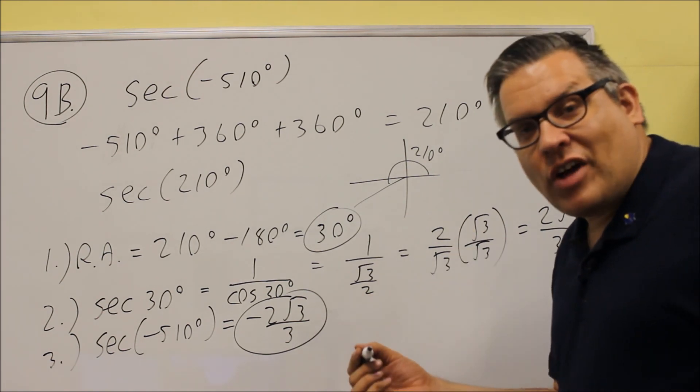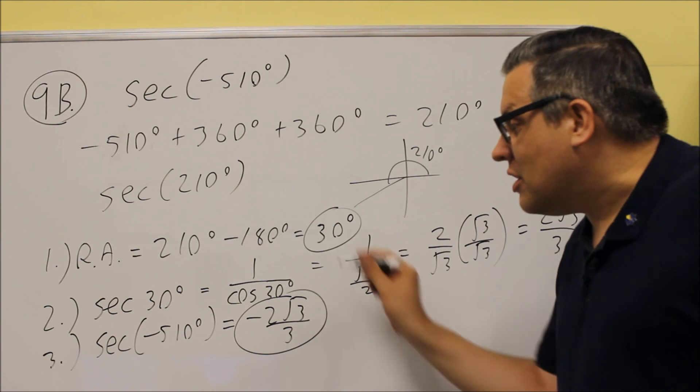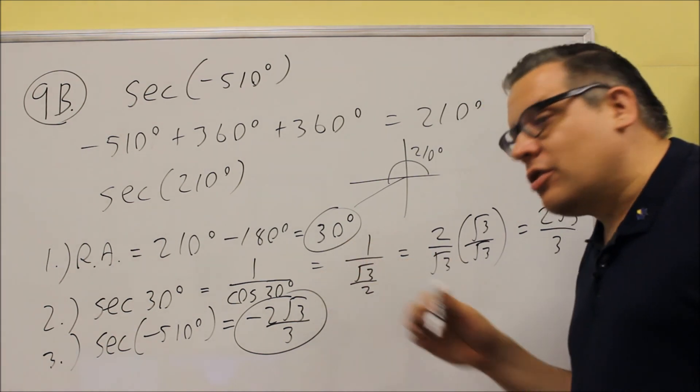So again, a reminder, if it says exact value, you don't want decimals. You want the exact fraction, including the square roots.